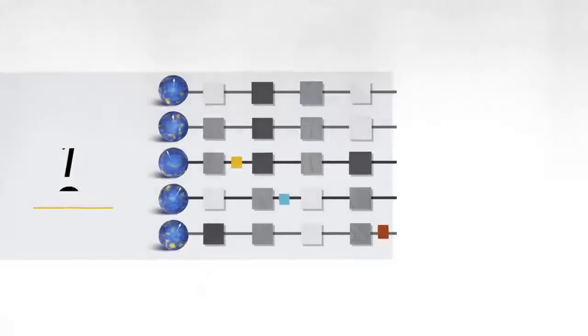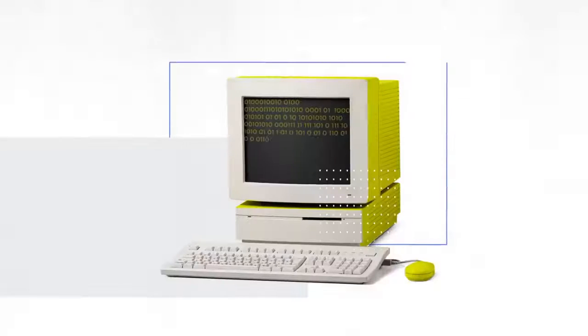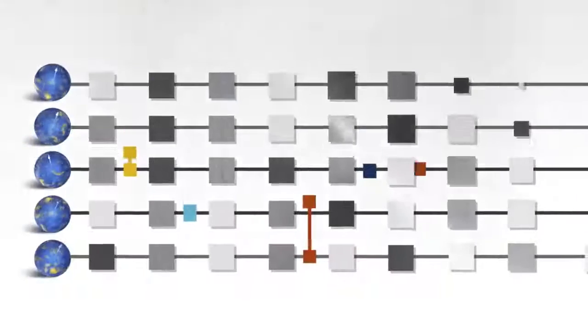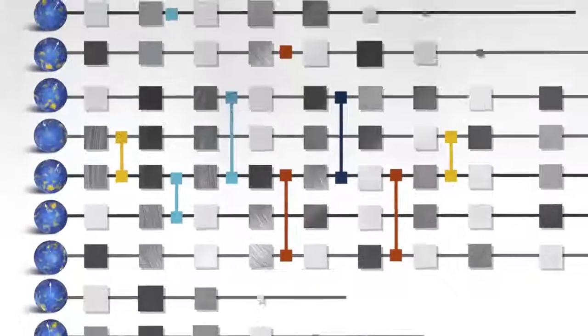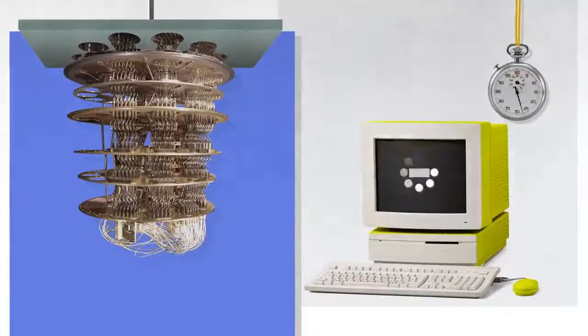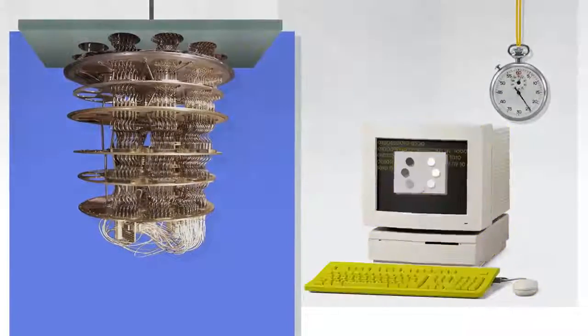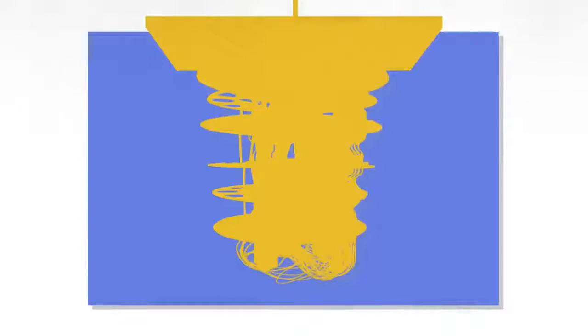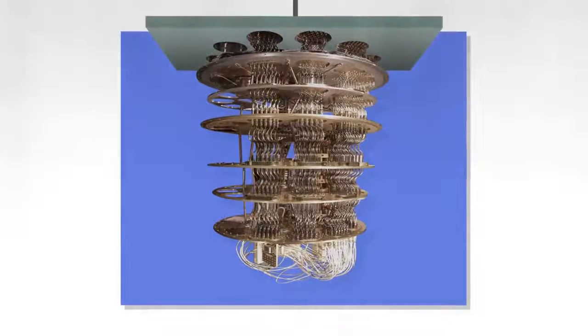To actually demonstrate quantum supremacy we have three steps. First, pick a circuit. Second, run it on the quantum computer. Third, simulate what the quantum computer is doing on a classical computer. We gradually increase the complexity of that circuit, and at some point it becomes completely impossible for the classical computer to keep up. Then we say we've achieved quantum supremacy.